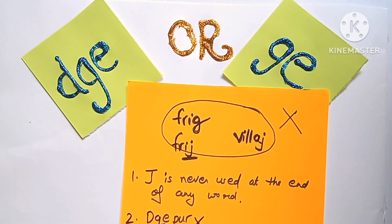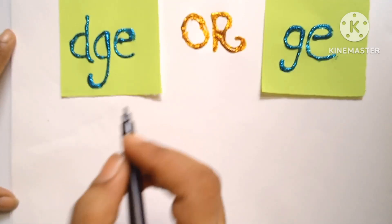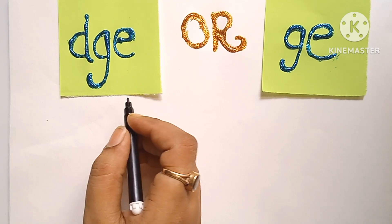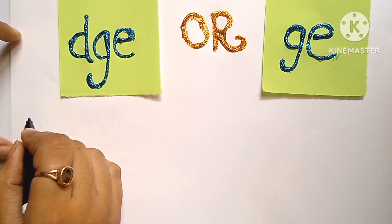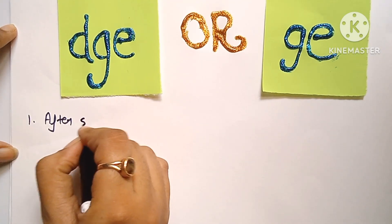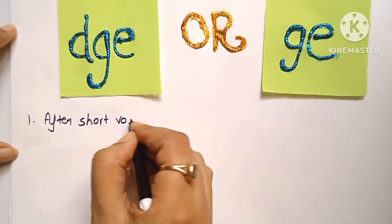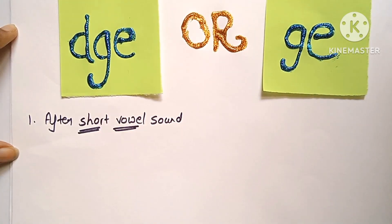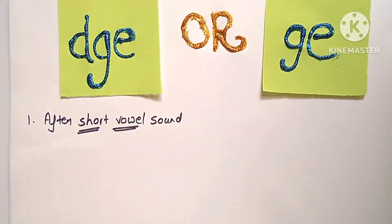Now, अब इन दोनों J sound options में हम differentiate कैसे करते हैं? D, G, E — इस combination का use हम short vowel sound के बाद करते हैं. It is used after a short vowel sound. Vowel होगा और short sound होगी — two points आपको ध्यान रखना है. जब vowel की short sound हो और J sound सुनाई दे, तब D, G, E का use करते हैं.